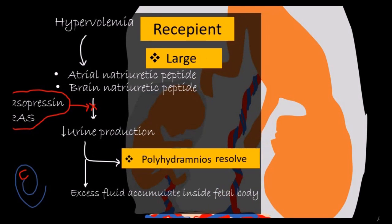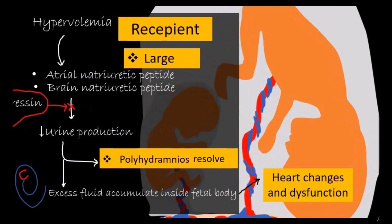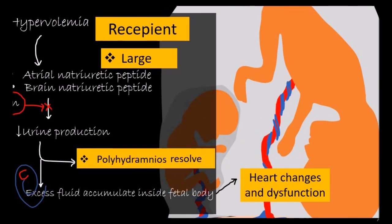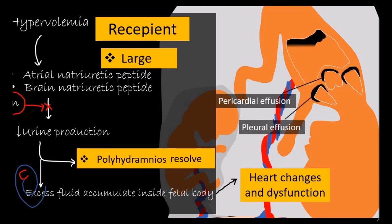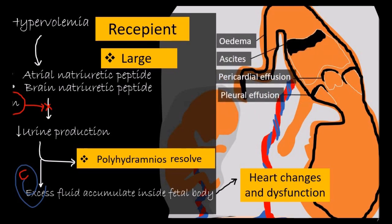And finally, volume overload will result in cardiovascular changes like cardiomegaly, myocardial hypertrophy, and cardiac dysfunction. In addition to cardiac dysfunction, hypervolemia and vasoactive substances will result in the movement of fluid outside the vascular system, resulting in the formation of pericardial effusion, pleural effusion, ascites, and subcutaneous edema. This collection of fluid in body cavities and soft tissue is known as hydrops.